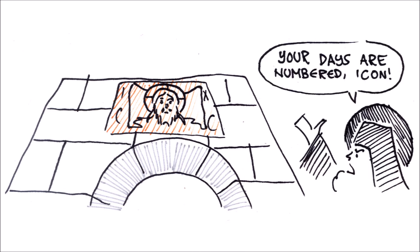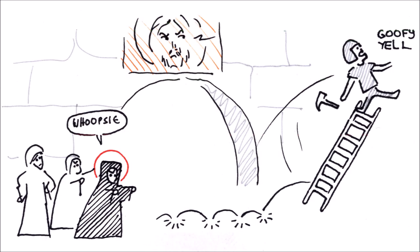In 730, the Iconoclast Patriarch Anastasius ordered the icon removed. The Virgin Martyr Theodosia and other women rushed to protect the icon and toppled the ladder together with the soldier who was carrying out the command.